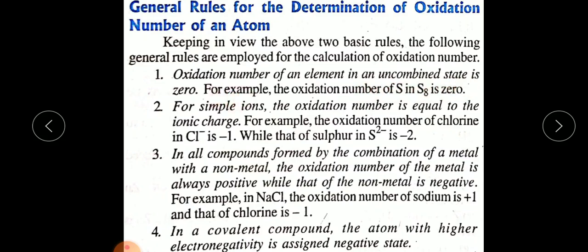Rule 1: The oxidation number of an element in an uncombined state is zero. If you have a single element — say for example H₂, which is in an uncombined state — the oxidation number of hydrogen will be zero. For example, the oxidation number of sulfur in S₈ is zero.